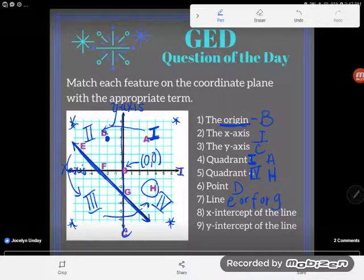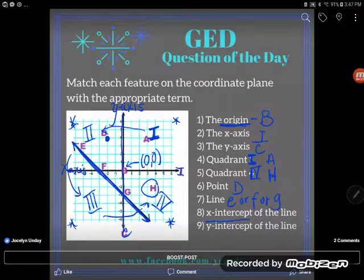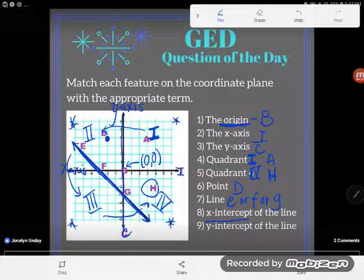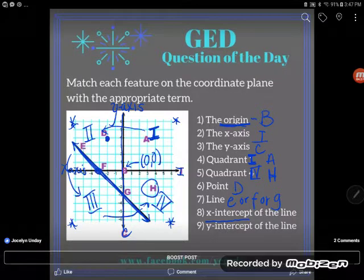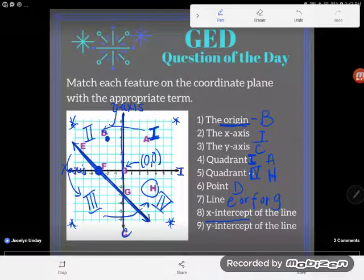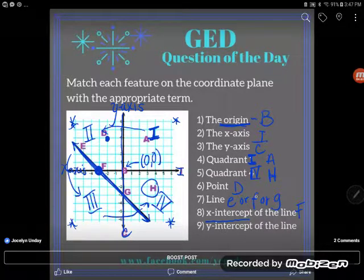Next one says X intercept of the line. So this might help me narrow it down. When you say X intercept, that's of the line, that's where my line crosses the X axis. So remember our X axis was our horizontal axis here. And there's my line. So there's the point where my line crosses the X axis. That's known as the X intercept. And that's clearly F. So this can't be F here.